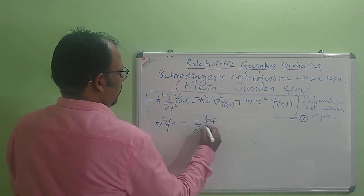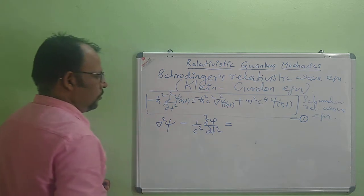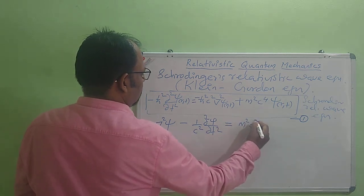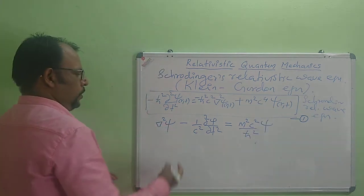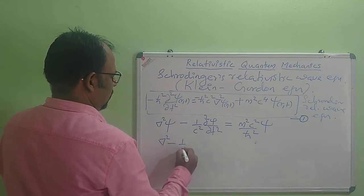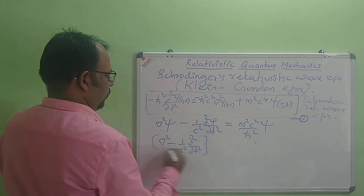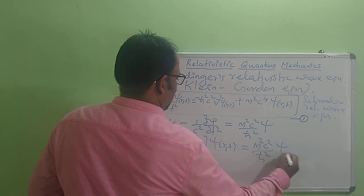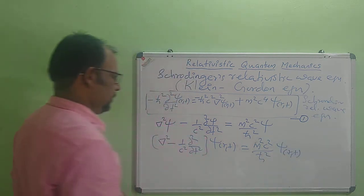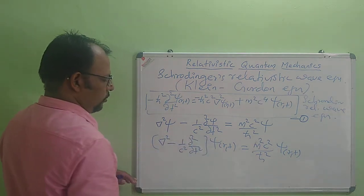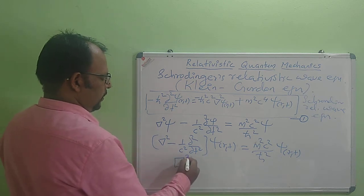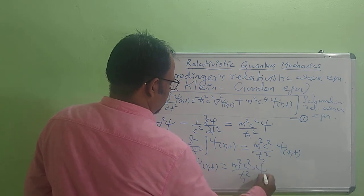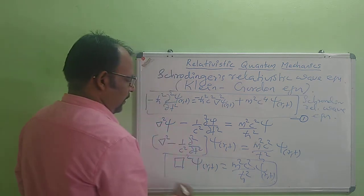After rearranging, we can write it as: (∇² − (1/c²) ∂²/∂t²) ψ = (m²c²/ħ²) ψ(r, t). The operator ∇² − (1/c²) ∂²/∂t² is called the D'Alembertian operator. So the D'Alembertian operating on ψ(r, t) equals m²c²/ħ² times ψ(r, t). This equation is called the Klein-Gordon equation and is equation number 2. This is relativistically invariant.